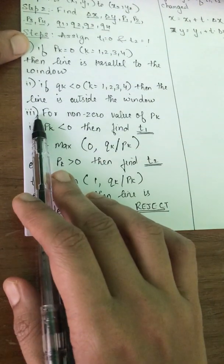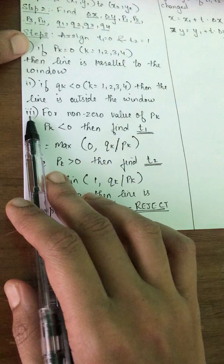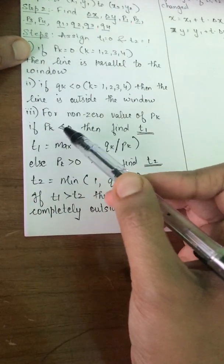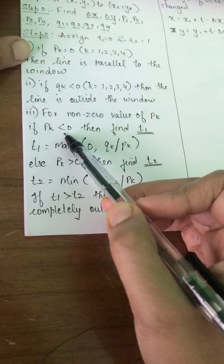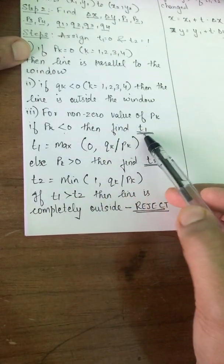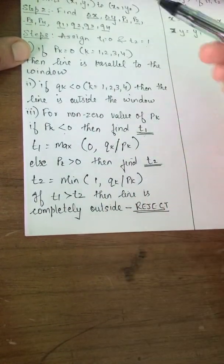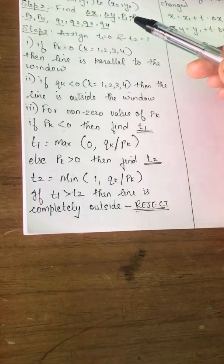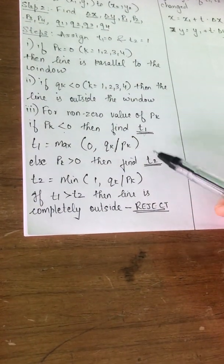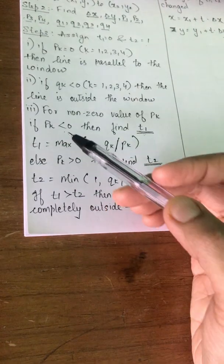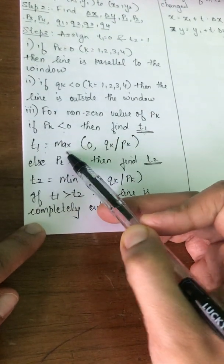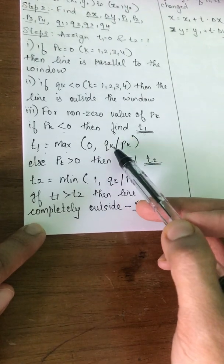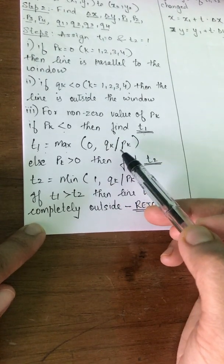The third condition is that for non-zero values of pk, if pk is less than 0, then what do I do? I find t1, the new t1. My old t1 is already 0, I have to find the new t1.